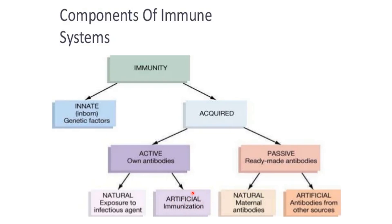After measles infection, lifelong antibodies are present in the body — this is natural active immunity. Artificial active immunity involves immunization, such as the BCG vaccine. When a live or killed vaccine is introduced into the body, it acts as a foreign body and the body produces antibodies — this is artificial active immunity.